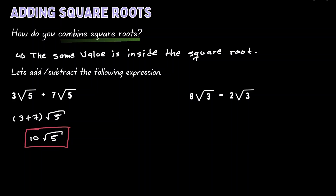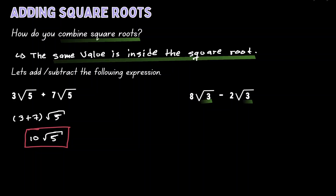On the example on the right, we have 8 square roots of 3, and then we want to subtract 2 square roots of 3. Notice that in the first term, the value inside the square root is 3, and in the second term, the value inside the square root is also 3. Because they have the same value inside the square root, then we can combine the values outside of those square roots. So if we have 8 of those square roots of 3, and we take away 2 of those square roots of 3, we're going to end up with 6 of those square roots of 3.